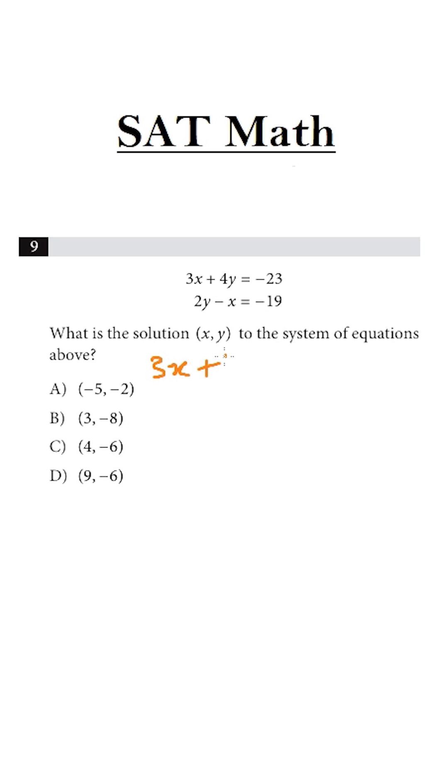3x plus 4y is equal to minus 23. And let's multiply this equation by 2.